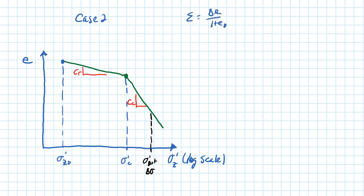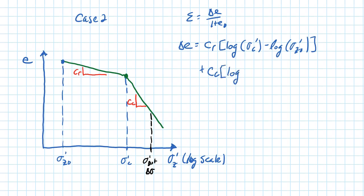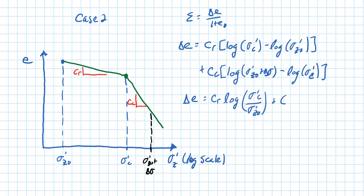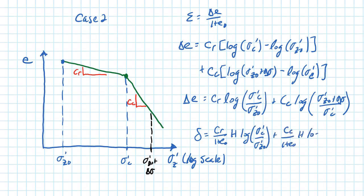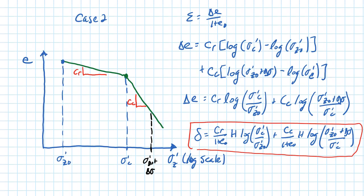The strain is the change in void ratio over 1 plus the initial void ratio. The change in void ratio equals C sub R times the log of the pre-consolidation stress over the initial vertical effective stress, plus C sub C times the log of the final stress (sigma-prime-C0 plus delta-sigma) over the pre-consolidation stress, applying the law of logs. Settlement is then H times the change in void ratio divided by (1 + E0), for this over-consolidated Case 2 where sigma-prime-C0 plus delta-sigma is greater than sigma-prime-C0.